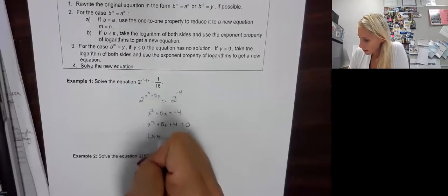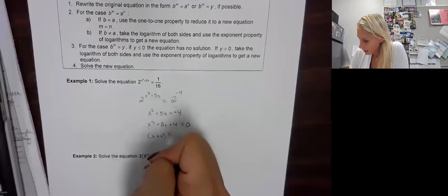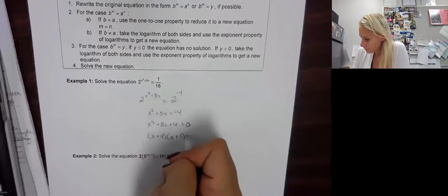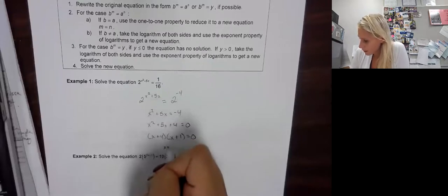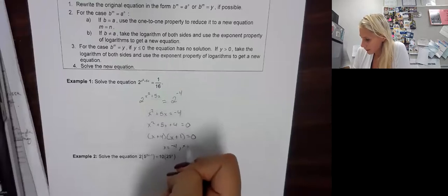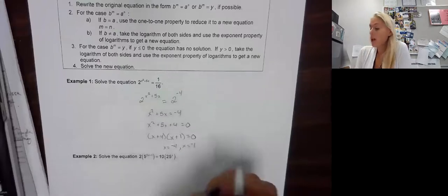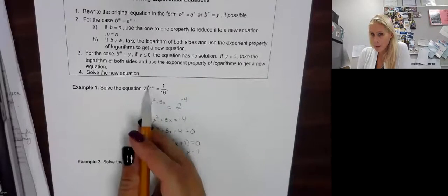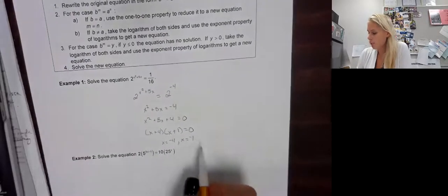So we get x plus 4 times x plus 1. So x equals negative 4 and x equals negative 1. Plug back in to see if it works. We can do that in our calculator. When you do that, both of them do work.